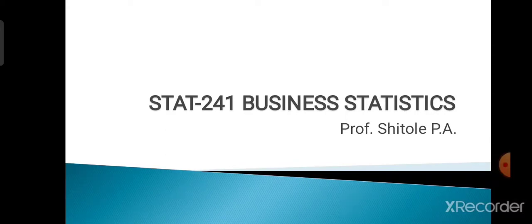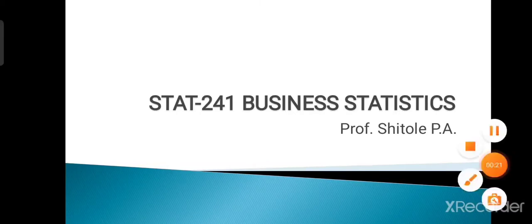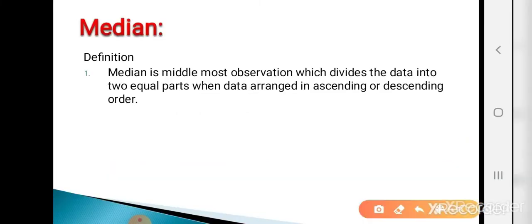Now in today's lecture we are going to learn the first positional average, named median. Median is the middlemost observation which divides the data into two equal parts when data is arranged in ascending or descending order. Simply, median means the middlemost observation of our data.